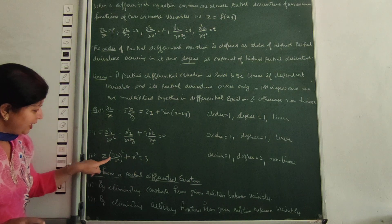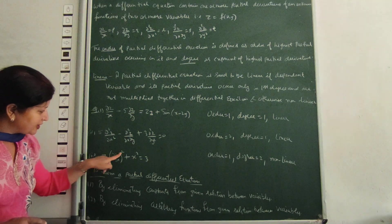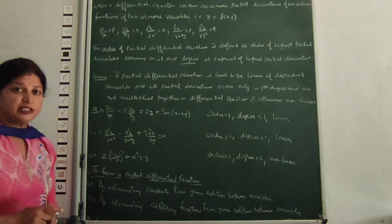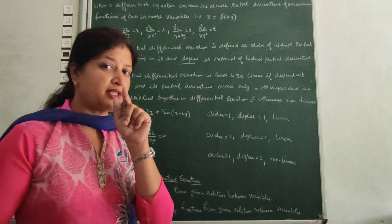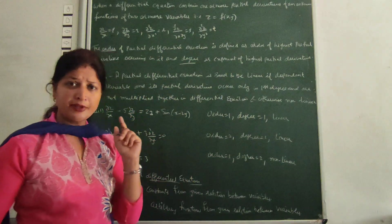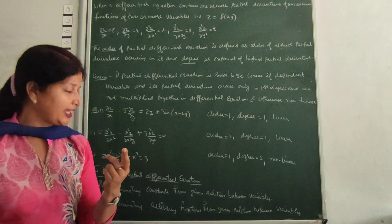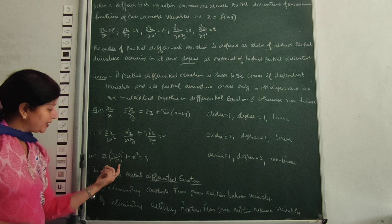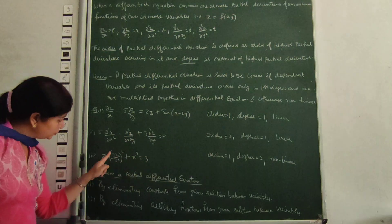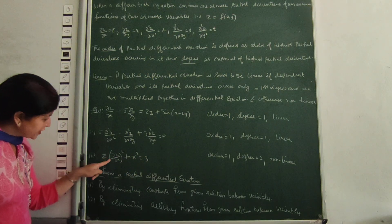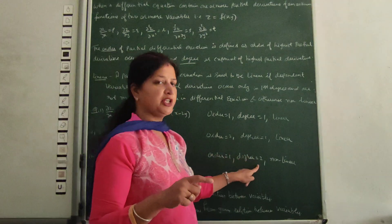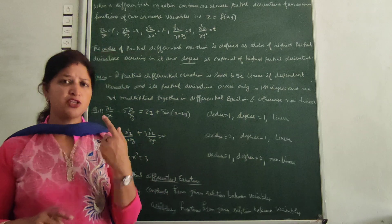Next example: this involves a square and z. So this is not linear. We check: order is 1 — the highest order derivative is first order. The degree is 2. But this is a non-linear partial differential equation.